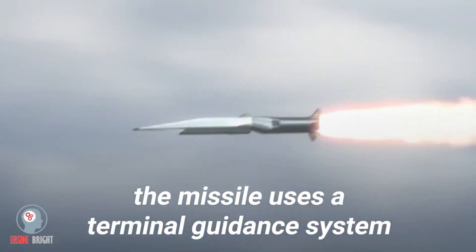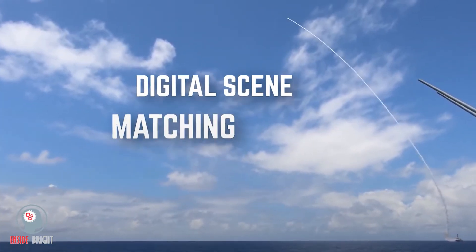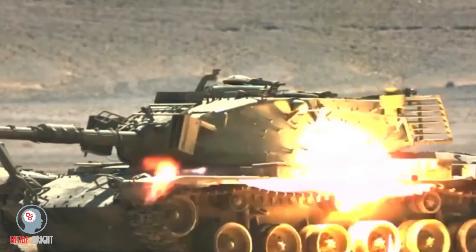The missile uses terminal guidance system to find its target that is already programmed, or it uses the digital scene matching area correlator system to find the target. As the front part of the missile hits the target, it explodes.